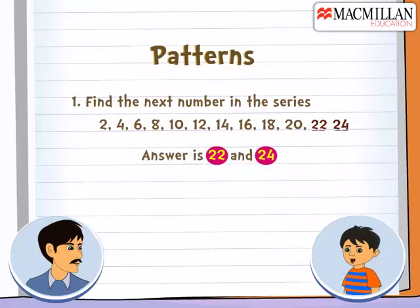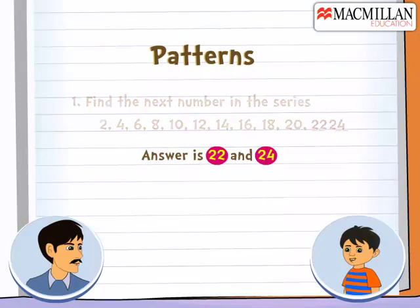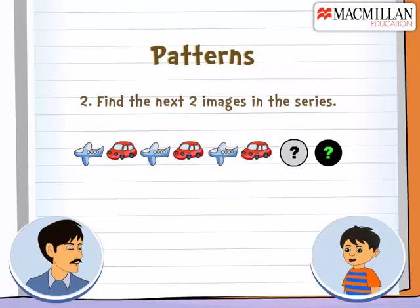In the second question, the image of the car is followed by the image of the airplane. So, the next image of the car will be the airplane and then the car again.